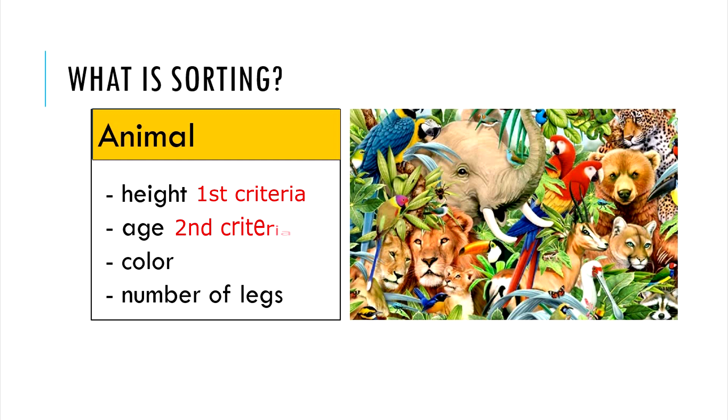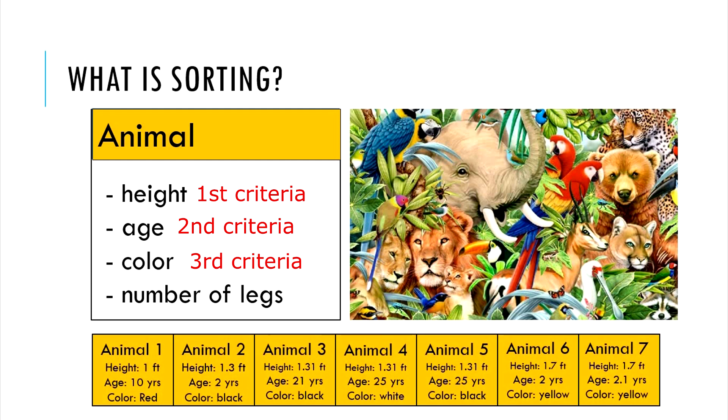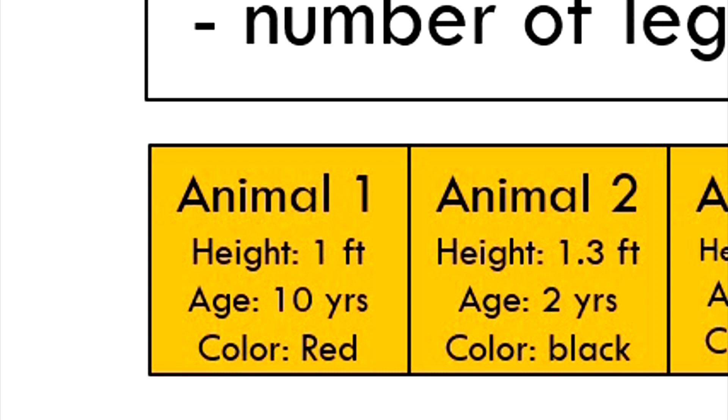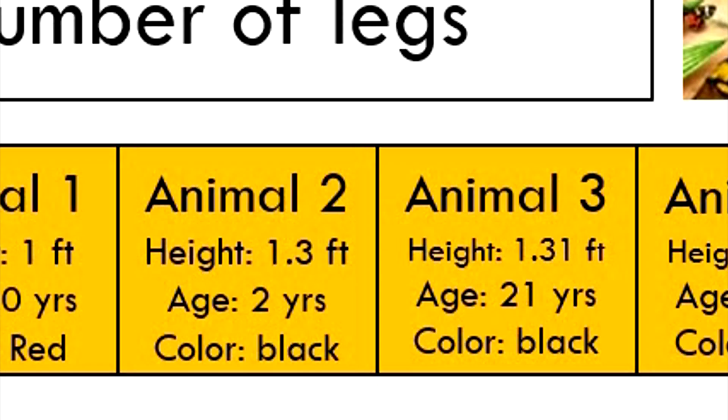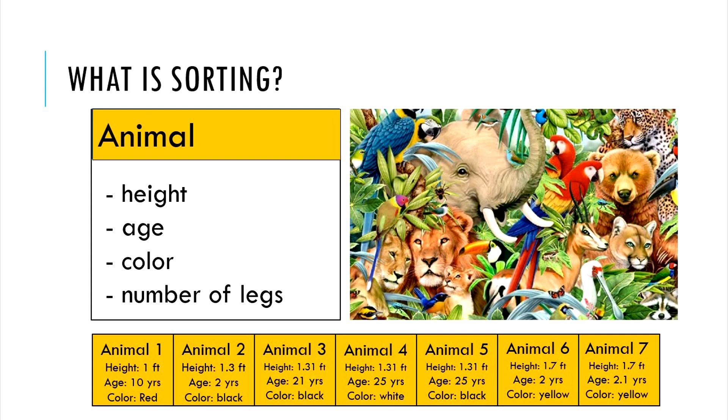If our first sorting criteria is height in ascending order, the second sorting criteria is age in ascending order, and the third criteria is color in order of how light they are, the sorted list would look like this. Notice how animal 1 has smaller height compared to animal 2. Therefore, animal 1 is sorted before animal 2. Similarly, animal 3's height is 1.31 feet, a little higher than animal 2's height of 1.3 feet. Thus animal 3 is ordered after animal 2.